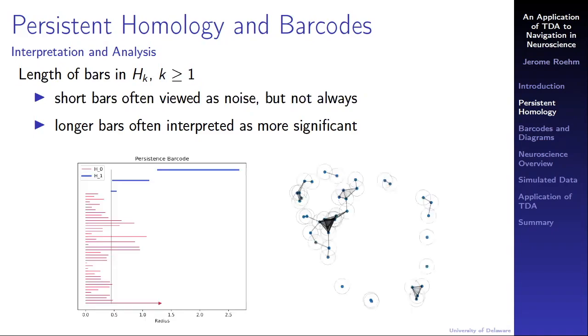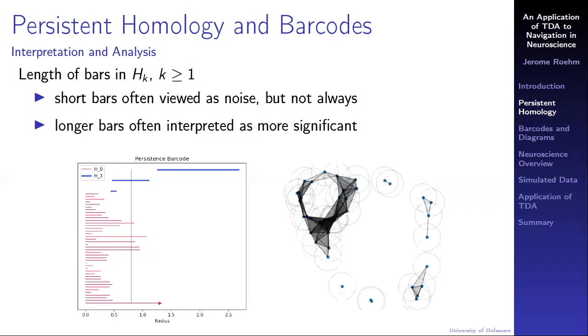For example, the tiny hole dies not long after it was born. We could easily write that off as sampling noise. Maybe if our data points were shifted slightly, the hole would have never formed in the first place. It is intuitive that small changes in the data points result in only small changes in the bars. In fact, the stability theorem guarantees it, which is why persistence homology is considered robust to noise. The two longer bars in the barcode correspond to the two holes that we would naturally pick out from looking at the point cloud.